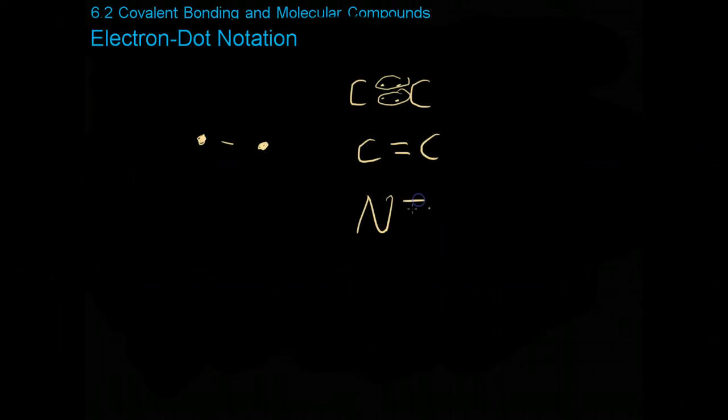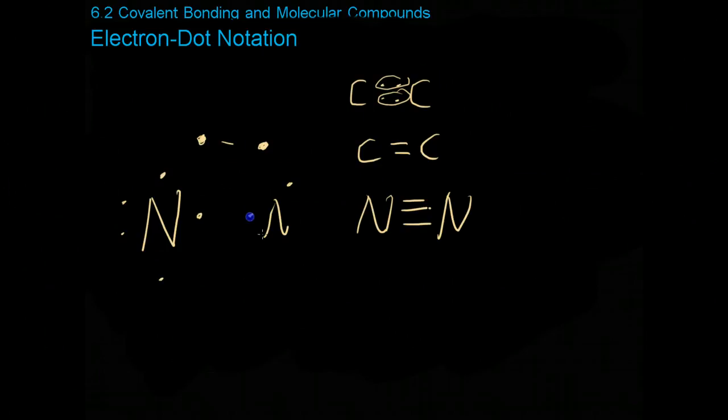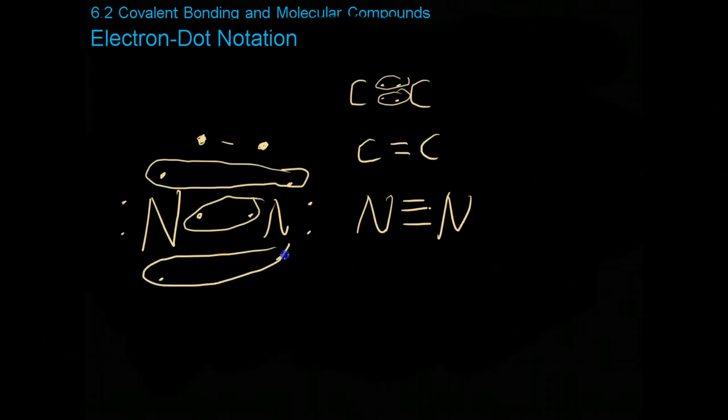This is because if you look at the electron dot notation for nitrogen, which has five electrons in its valence, what you'll find is that if you share this top pair, the middle pair, and the bottom pair, is that each one in this shared orbital then has a grand total of six in the shared plus the two it already has to form the octet rule only by following triple bonds. So these double and triple bonds are referred collectively as multiple bonds.